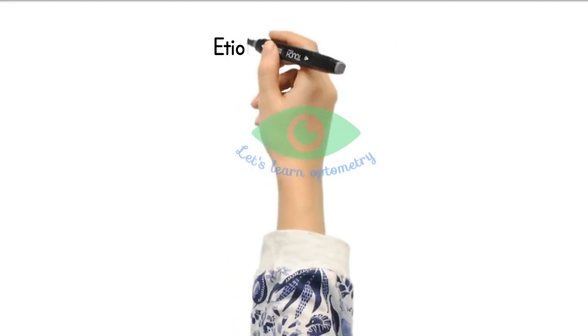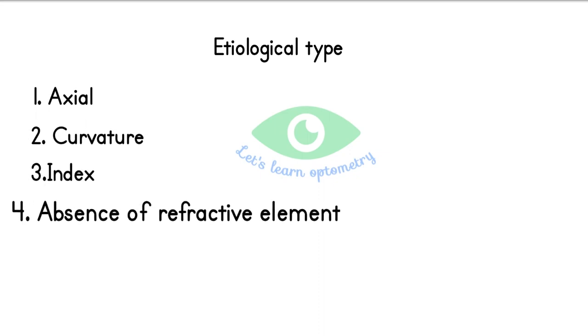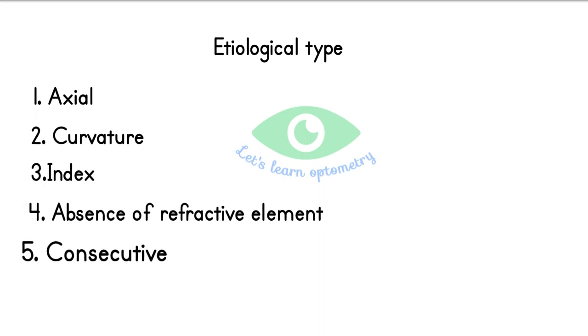Etiological type: In this category we divide hypermetropia based on what or how it is caused. It has five further types: axial, curvature, index, absence of refractive element, and consecutive hypermetropia.